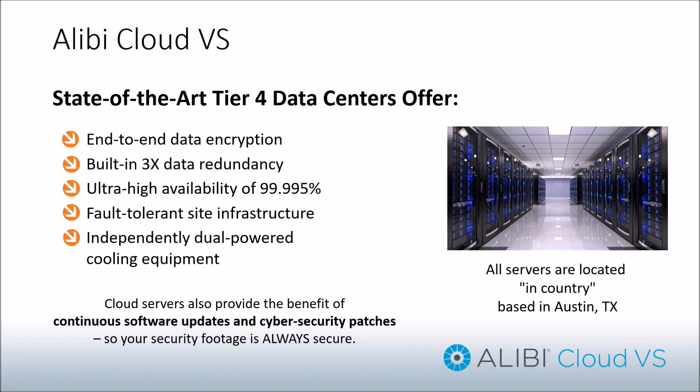As a tier four data center, you get ultra-high availability — 99.995% uptime — with fault-tolerant infrastructure including independent dual-powered cooling equipment, redundant power, and redundant storage servers. The other benefit is that because Cloud VS is a centralized system, it's always up to date. Most people don't review video or update on-premise systems regularly. We push updates centrally as they come out, so if a customer doesn't look at that camera for a year and then opens the software, we push the update and they're immediately up to date.